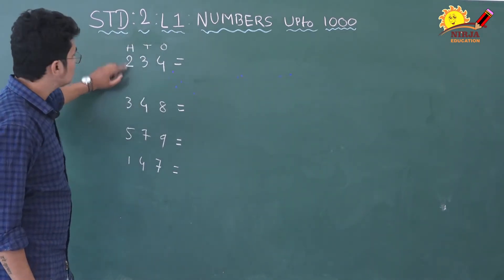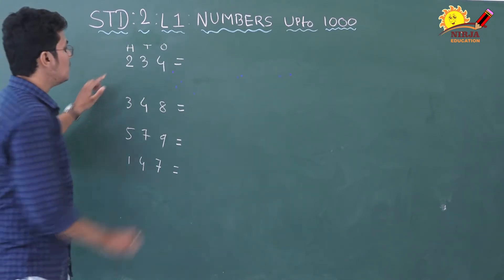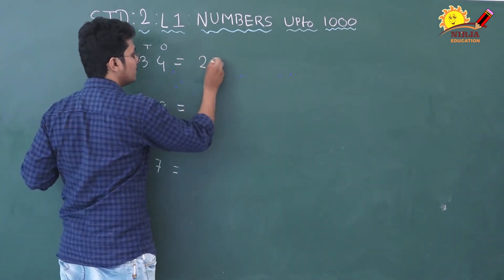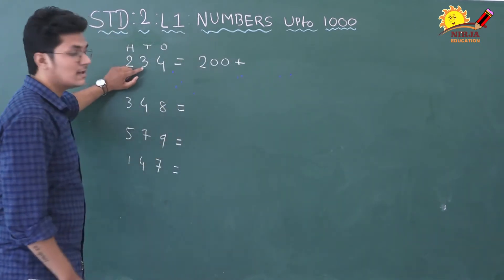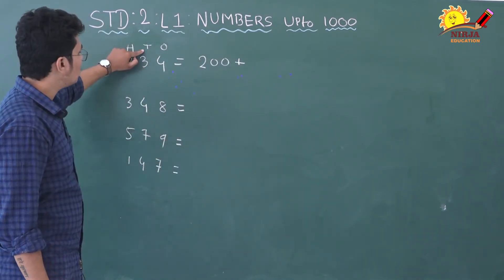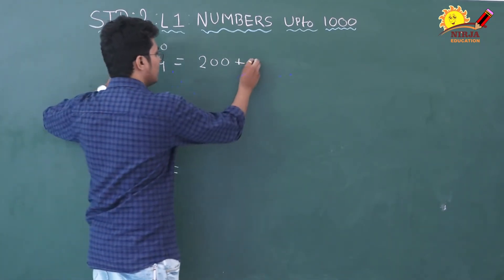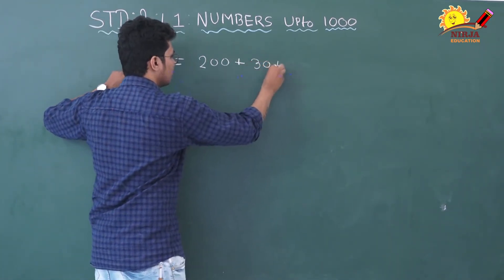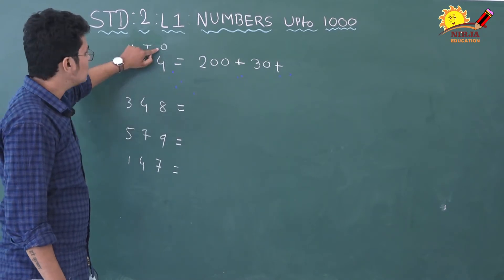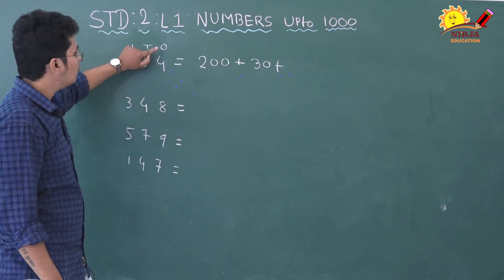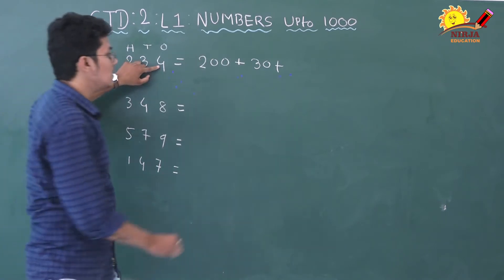Number 2 is on the hundreds place. So, 2 ki place value hoi? 200. Plus, uske baad hai 3. 3 is on the tens place. So, 3 ki value hoi? 30. And 4 is on the ones place. 4, ones ke place peh hai. To, 4 ki value hoi? 4.